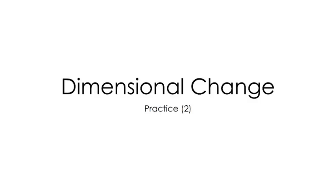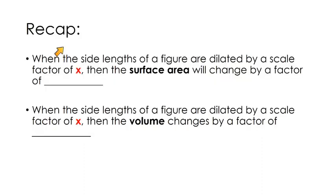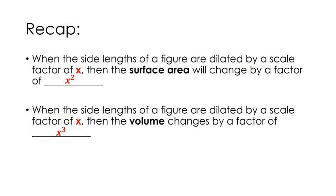In our second dimensional change video we are going to try to apply what we learned in the first video. To start, I want to recap this. I can't overstate the importance of this relationship: when the side lengths of a figure are dilated by a scale factor of x, the surface area will change by a factor of x squared. We derived this in the last video, so if this doesn't make sense, go back and watch that. When the side lengths are dilated by a scale factor of x, the volume changes by a factor of x cubed. This is our foundation for the problems we're about to do — make sure you write this down for easy reference.